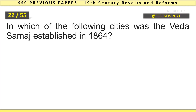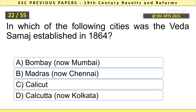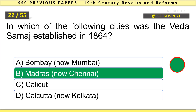In which of the following cities was the Veda Samaj established in 1864? Madras, now Chennai.